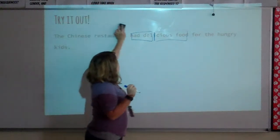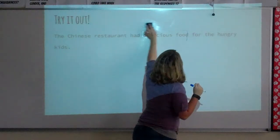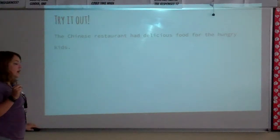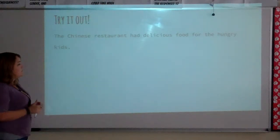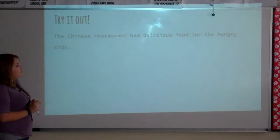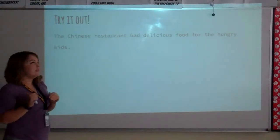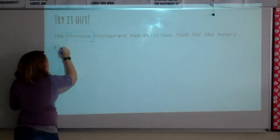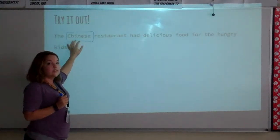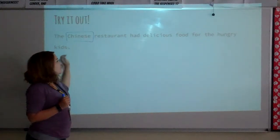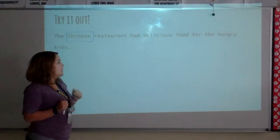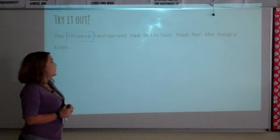All right, your turn to try it out. Pause the video and write this sentence down and try to see how many adjectives you can find. Okay guys, we'll go over this together. The first adjective I see is the word Chinese — this word is actually describing this noun right here, restaurant. The Chinese restaurant had delicious food for the hungry kids.